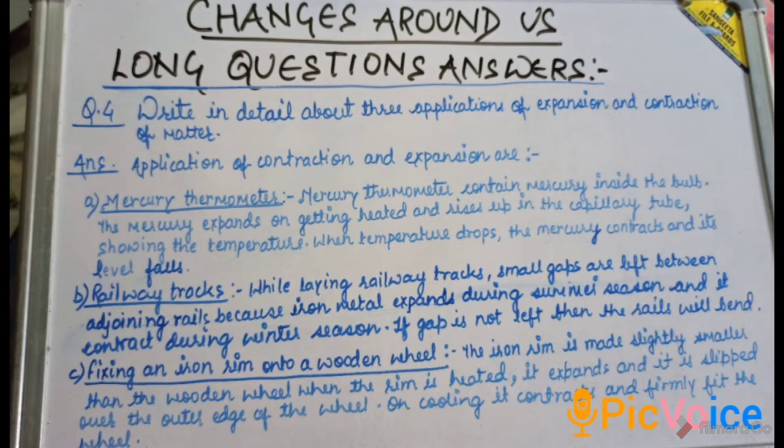Number one, mercury thermometer. First of all, mercury is a metal which exists in liquid form at room temperature. Mercury thermometer contains mercury inside the bulb, and the mercury expands on heating and rises up in the capillary tube showing the temperature. When temperature drops, the mercury contracts and its level falls.